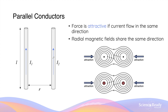If the two conductors are brought closer together, the force increases; if further apart, the force per metre decreases. An important concept is that the direction of the two currents determines the nature of the force. The force between the two conductors is attractive if the currents flow in the same direction. When the currents flow in the same direction, the radial magnetic fields determined by the right-hand grip rule also flow in the same direction, causing the two magnetic fields to join together and producing an attractive force.